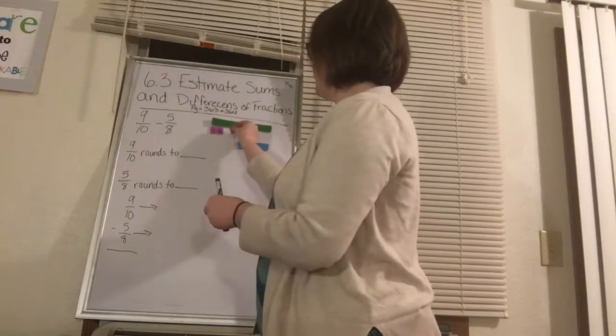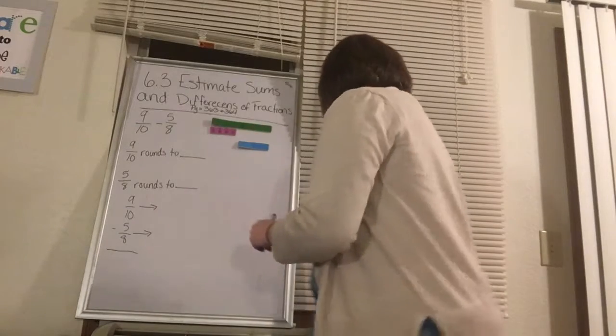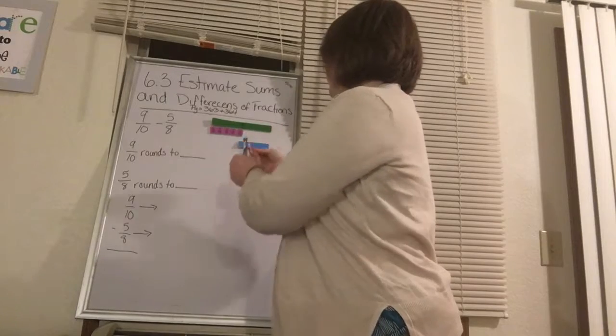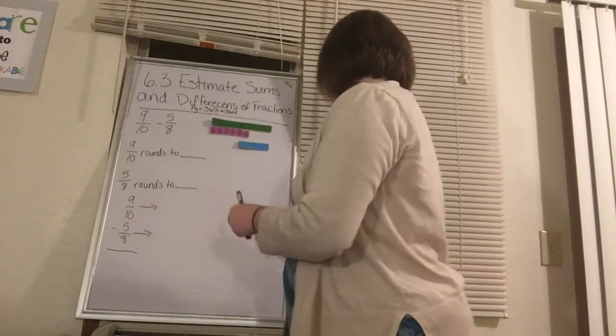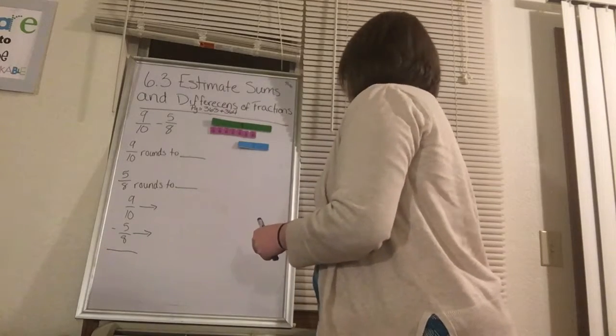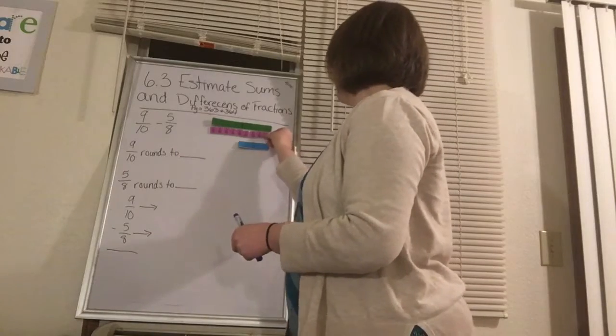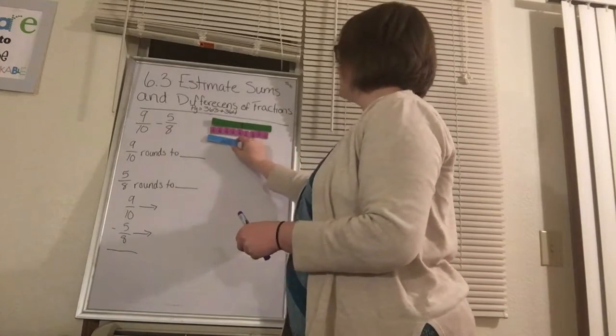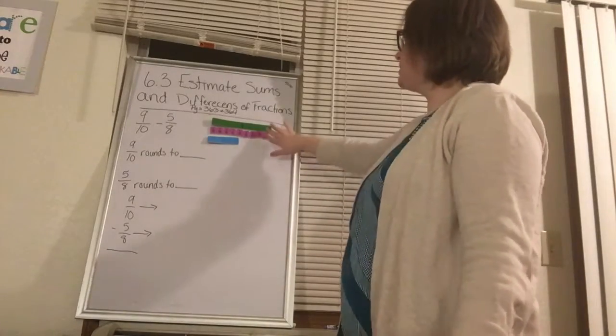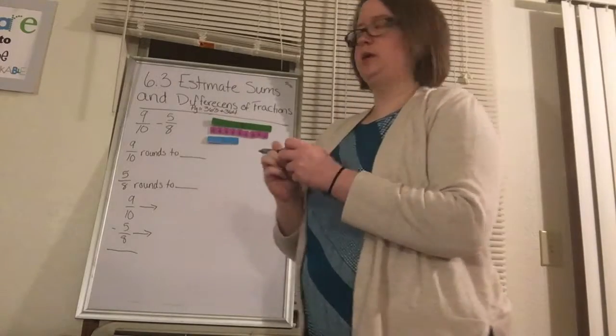There's 2, 3, 4, 5, 6, 7, 8, and 9. So which one is that line closest to? Is it closest to the 1, or is it closest to the 1/2? Well, it's obviously closest to the 1, because it's almost 1. So 9/10 rounds to 1.